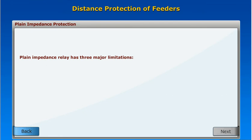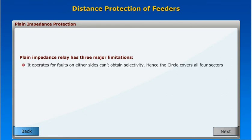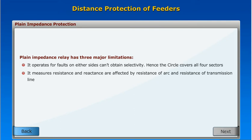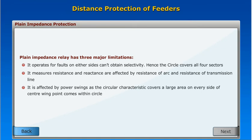Plane impedance relay has three major limitations. First, it operates for faults on either side and cannot obtain selectivity, as the circle covers all four sectors. Second, it measures resistance and reactance that are affected by the resistance of arc and resistance of the transmission line. Third, it is affected by power swings, as the circular characteristic covers a large area on every side, and the center wind point comes within the circle.